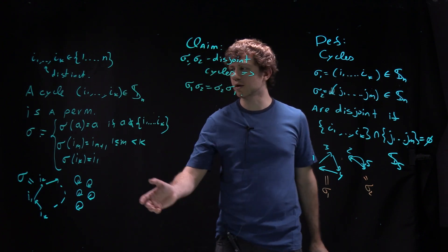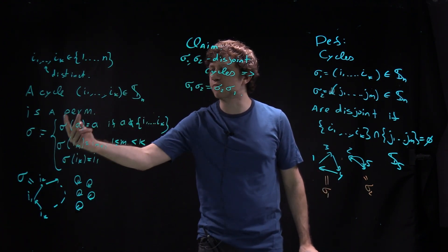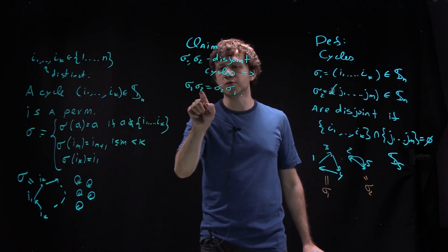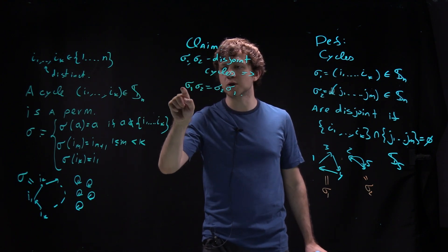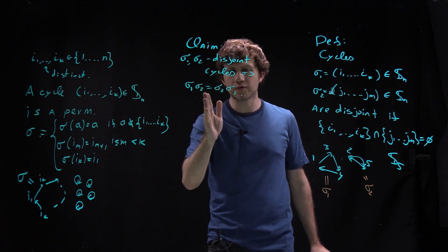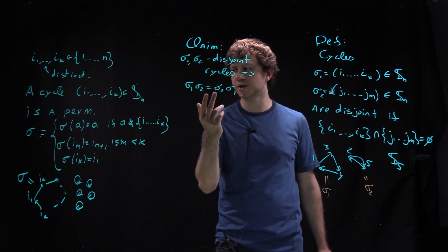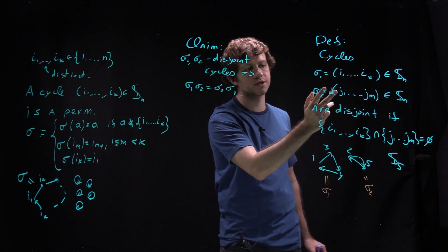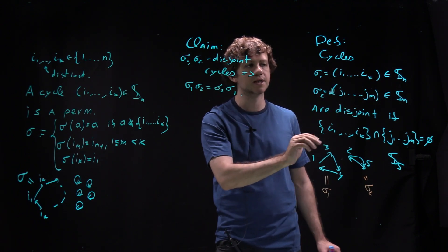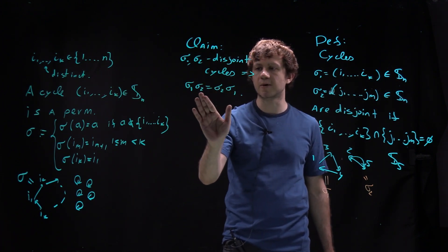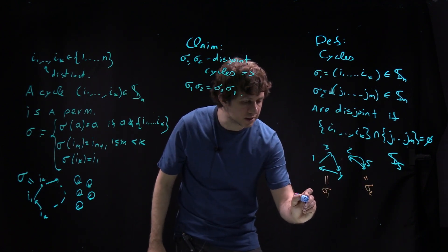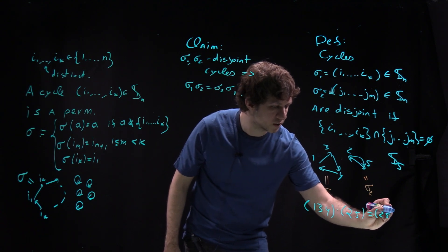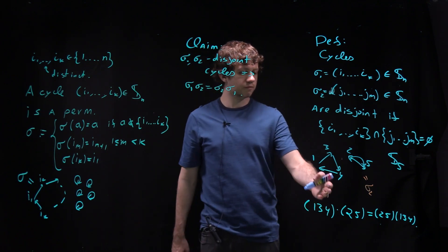The reason is completely obvious: each element moves for only one of the two permutations. If an element is inside the set defining sigma1, then sigma1 moves it and sigma2 fixes it. If it's inside sigma2's set, sigma2 moves it and sigma1 fixes it. If it's in neither, both fix it. So sigma1 sigma2 equals sigma2 sigma1. For instance in S5, cycle (1,3,4) times cycle (2,5) equals cycle (2,5) times cycle (1,3,4).